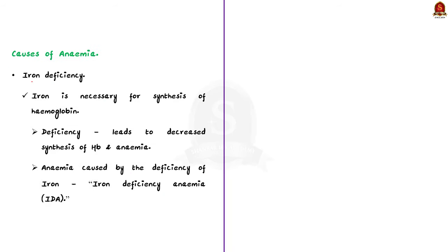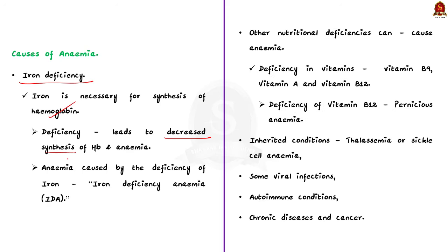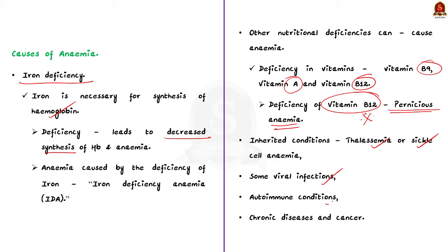Now let us see the causes of anemia. The first and major cause is iron deficiency — iron is necessary for synthesis of hemoglobin, so when there is a deficiency it leads to decreased synthesis of hemoglobin. Other nutritional deficiencies can also cause anemia: deficiency of vitamin B9, vitamin A, or vitamin B12 can lead to anemia. Note that pernicious anemia is specifically caused by deficiency of vitamin B12. Other causes include inherited conditions like thalassemia or sickle cell anemia, viral infections, autoimmune conditions, and various chronic diseases and cancer.